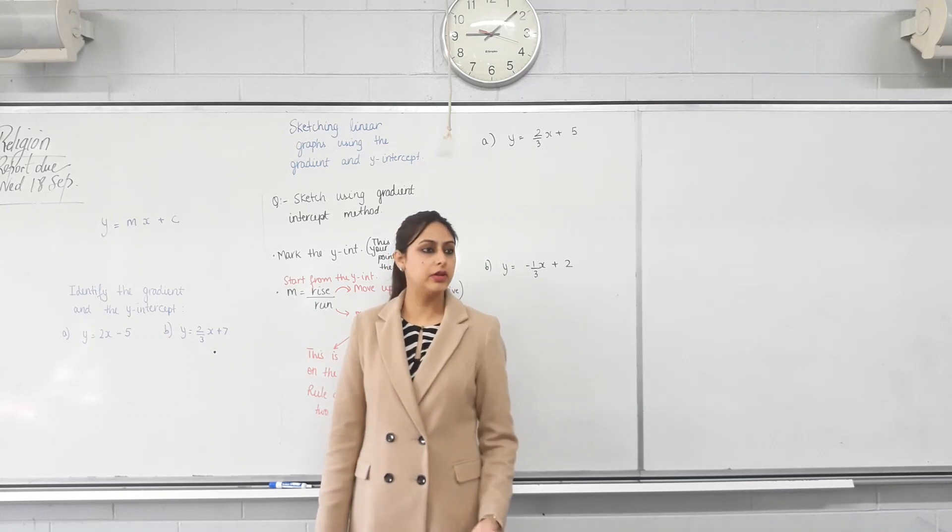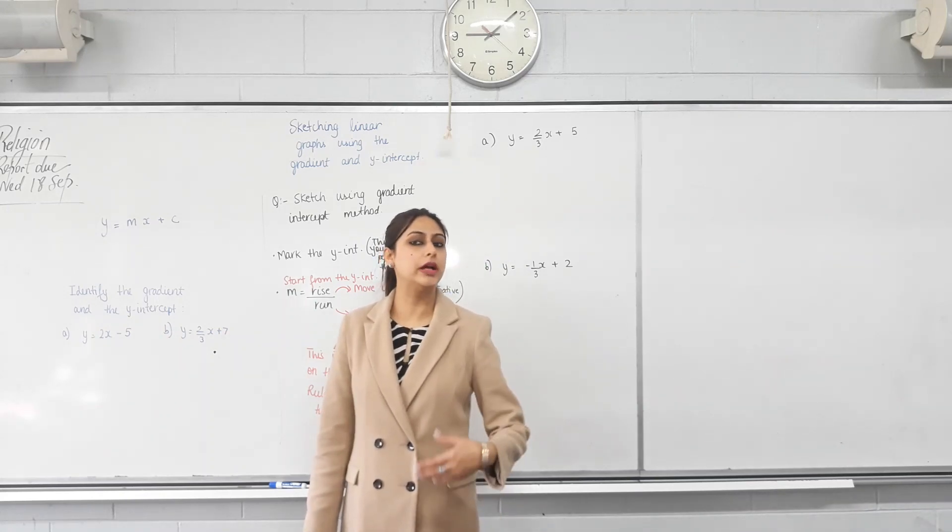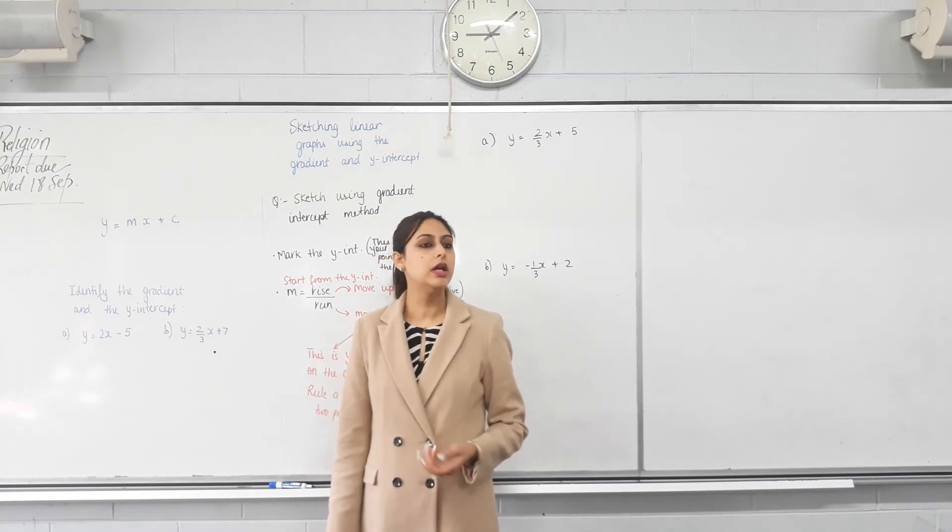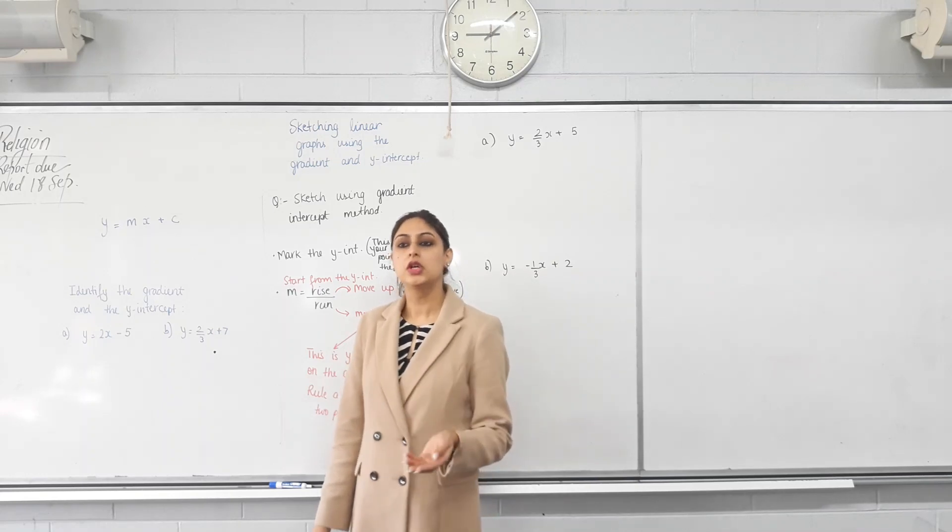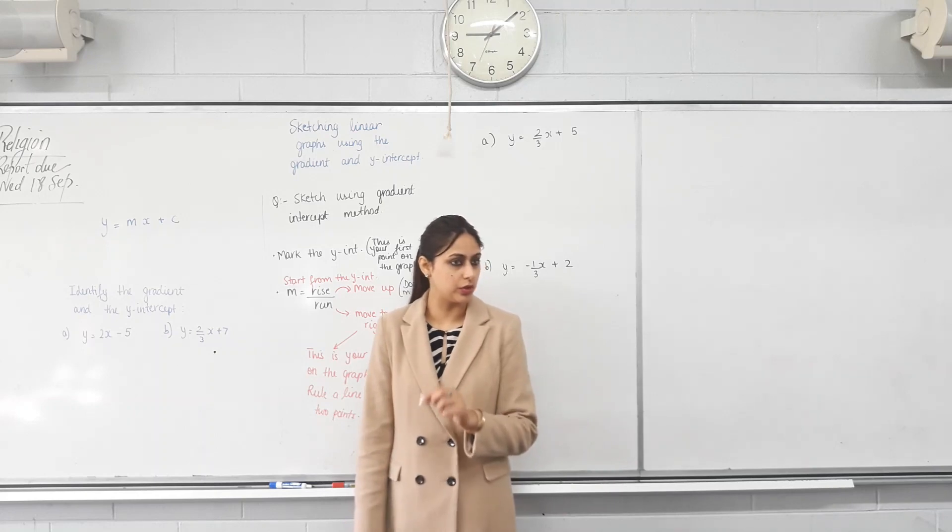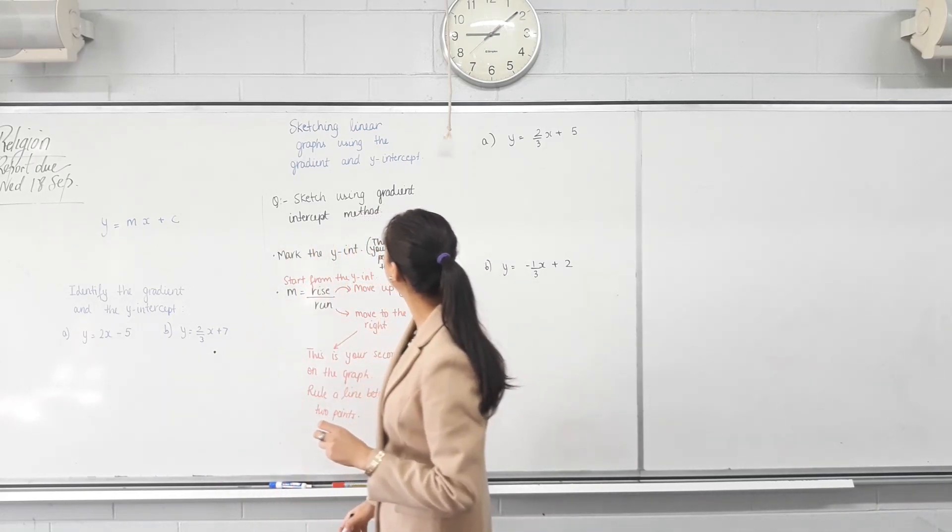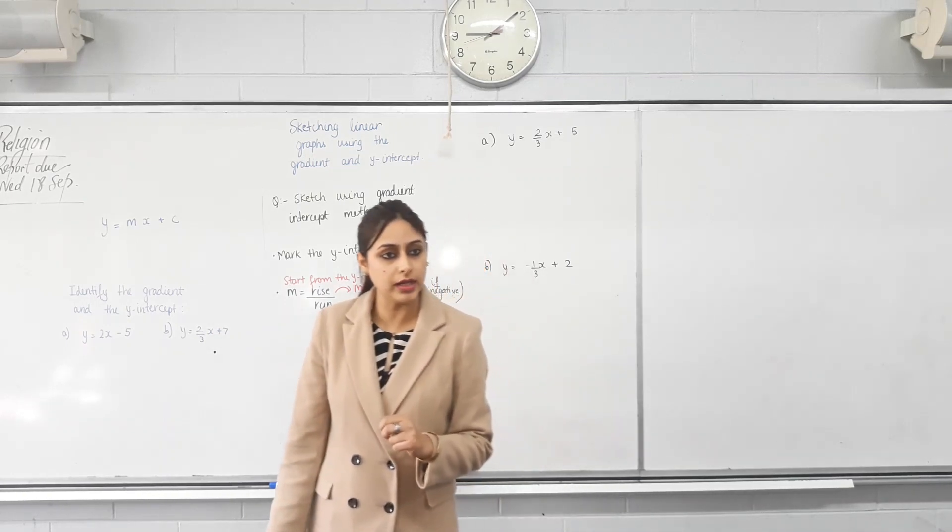And in years 10, 11 and 12 as well, you never have to plot a graph. So we did plotting so you understand how we get graphs. Why are these called linear relationships? But now that we know that they are linear relationships, we don't need to plot. So we actually sketch graphs and we only mark the important points on the graph. So there's two methods. I'm going to go through the first one.